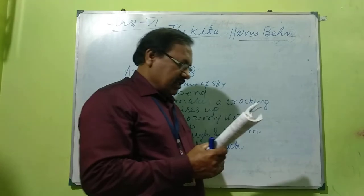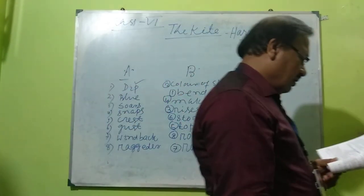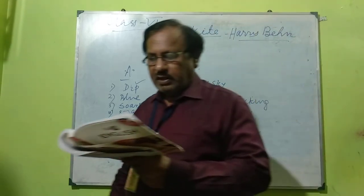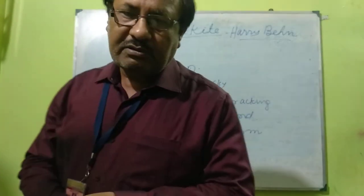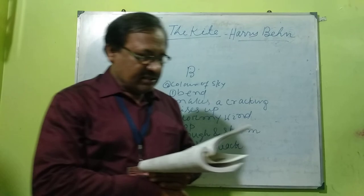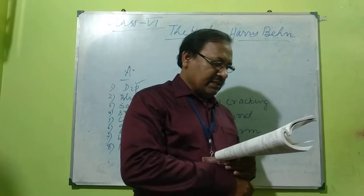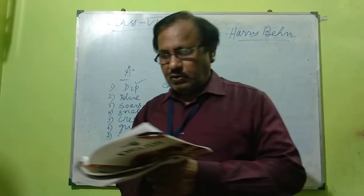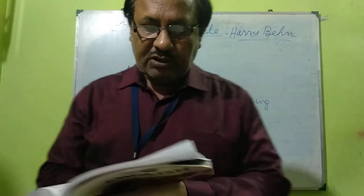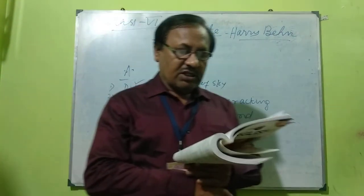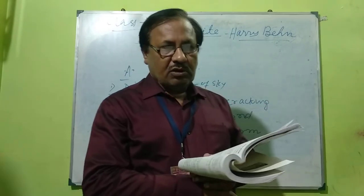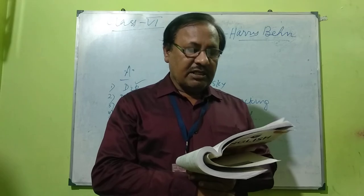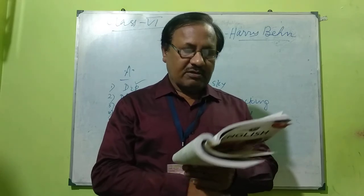Come to the first stanza: 'How bright on the blue is a kite when it's new.' What is new? The kite. What is bright? The kite. What is blue? The sky. So the meaning is, when the sky is clear and blue — when it is not stormy, when it is not cloudy — a new kite looks bright and good looking.